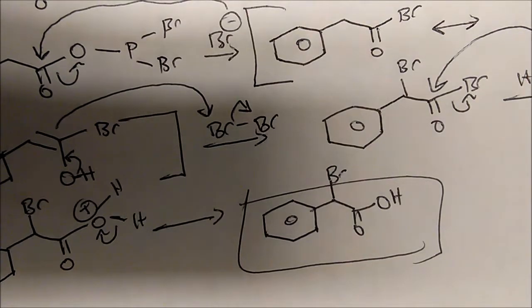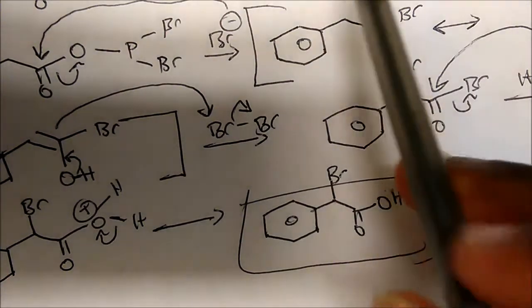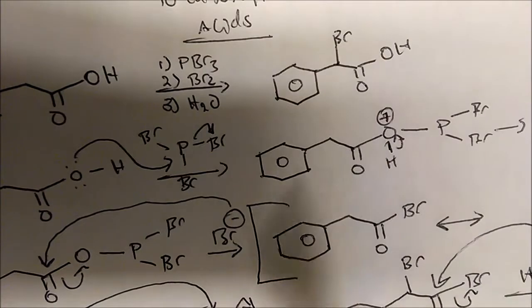So again, these reactions are pretty simple. We take a carboxylic acid and we add PBr3, Br2, or even Cl2, doesn't matter. And water, we're going to get the addition of the halogen on the benzylic carbon.